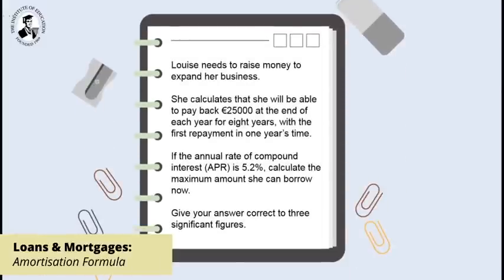Louise needs to raise money to expand her business. She calculates that she will be able to pay back €25,000 at the end of each year for eight years with the first repayment in one year's time. If the annual rate of compound interest APR is 5.2%, calculate the maximum amount she can borrow now. Give your answer correct to three significant figures.